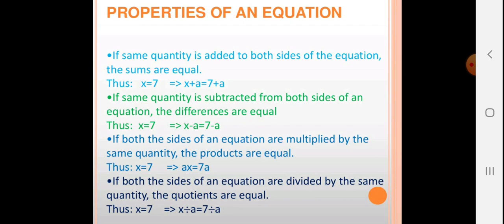What are the properties of an equation? First: if the same quantity is added to both sides of an equation, the sums are equal. Thus, if x = 7, then x + a = 7 + a. Second: if the same quantity is subtracted from both sides of an equation, the differences are always equal. Thus, if x = 7, then x − a = 7 − a.